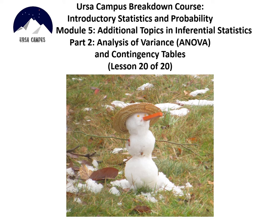Hello and welcome to lesson 20, the last of 20 lessons in the IHRSA Campus breakdown course on introductory statistics and probability. This is module 5: additional topics in inferential statistics, part 2 — analysis of variance (ANOVA) and contingency tables.